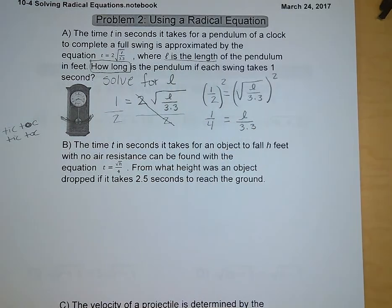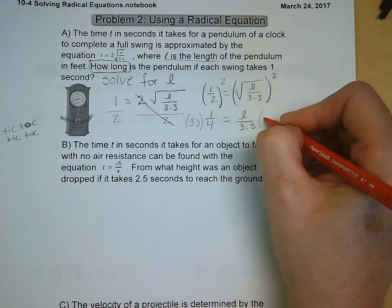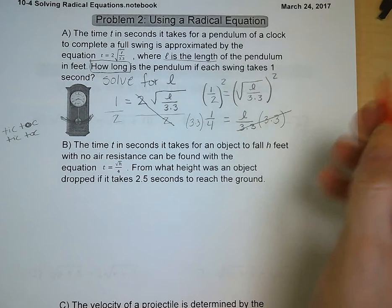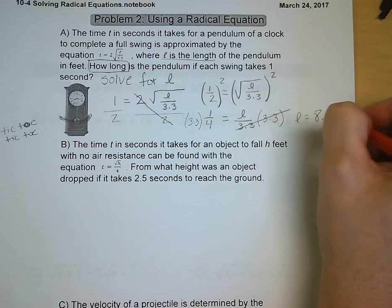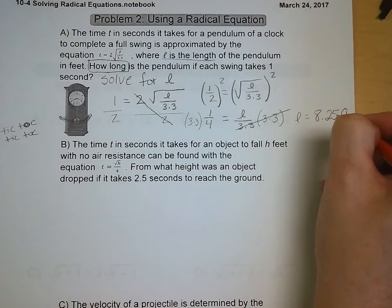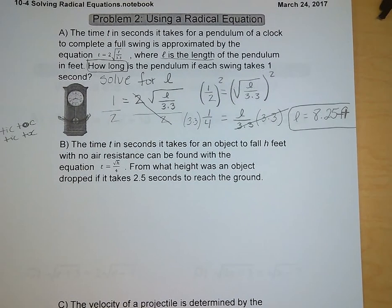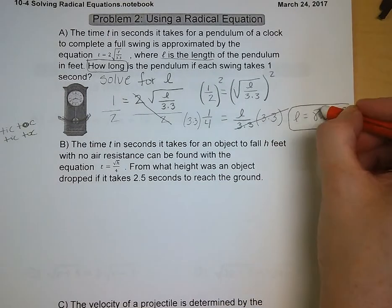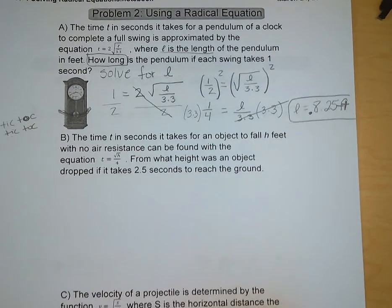And if we want to get l by itself, we need to multiply both sides of the equation by 3.3. So 1 fourth times 3.3 gives us 0.825 meters. Meters? Not meters. The length is in feet. I'm sorry, it is in feet, not meters. 0.825 feet. I was going to say an 8-foot pendulum is awfully large. It's a little under a foot.